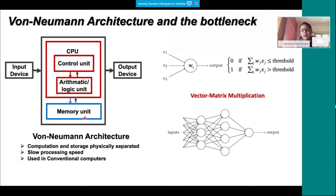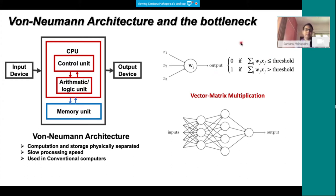A basic neuron has several inputs and one output, that is the synapse. This is called the ANN — artificial neural network — basic model. You have weights Wi associated with each input, and the output is the summation of the product of Wi and Xi. You also have an activation function with a threshold value: when the summation is lower than this threshold the neuron will not fire, but when it is more than this threshold, it will fire.